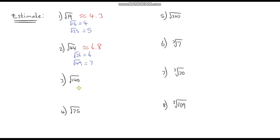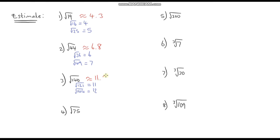Next: square root of 140. I know that 12 squared is 144, so the square root of 144 is 12. The one below that: 11 squared is 121, so the square root of 121 is 11. This time 140 is much closer to 144 than to 121, so it's going to be approximately 11.9.